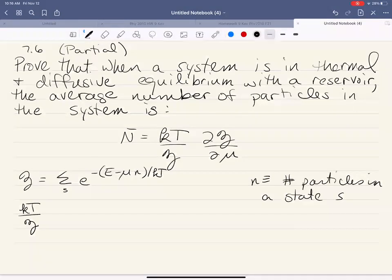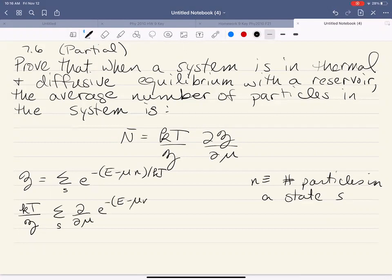And then I'm going to take my partial derivative over my Gibbs factors. That means that the partial moves inside the sum. So you have the sum over all the states of the partial with respect to μ of your Gibbs factors. So that's e to the minus (E - μn)/kT.